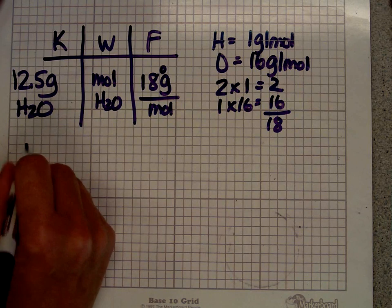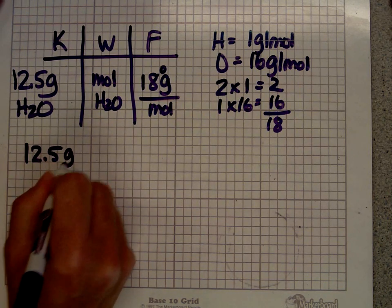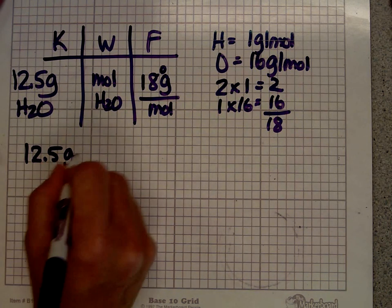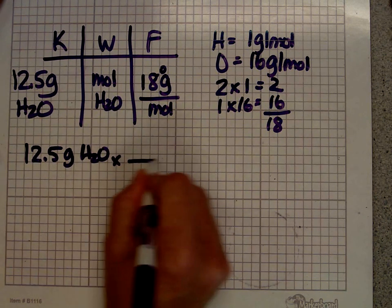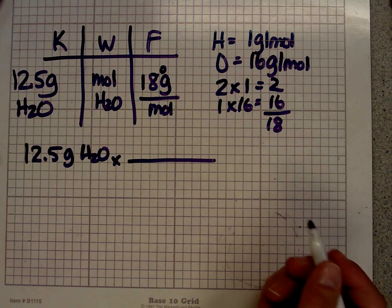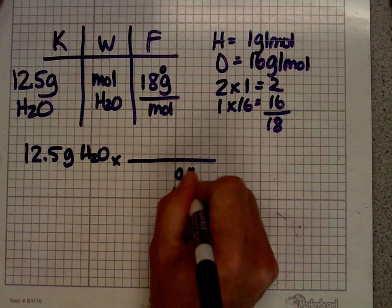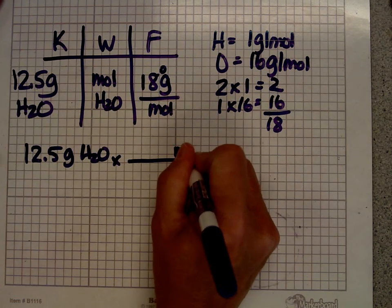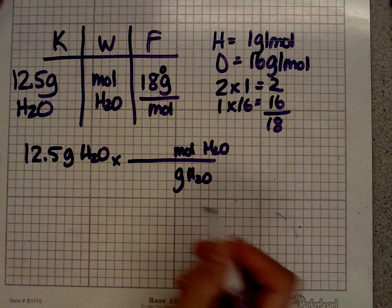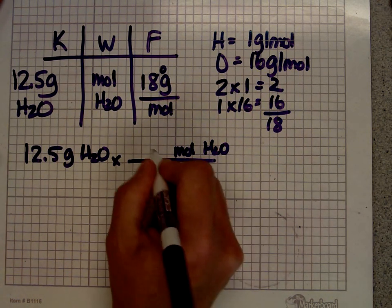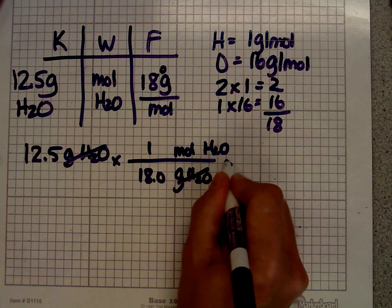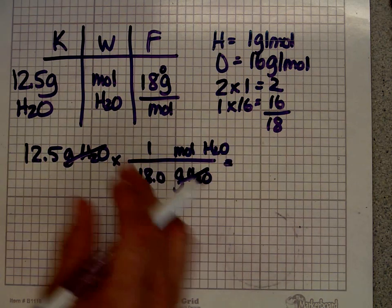I'm going to do just what I did before. I always write down, first thing I write down is what I know. 12.5 grams of water. And again, if you don't like writing that grams of water, get over it. It's going to make your life a lot easier if you start doing it. I want to get rid of grams of water. I want to be left with moles of water. I know that there are 18.0 grams in 1 mole.